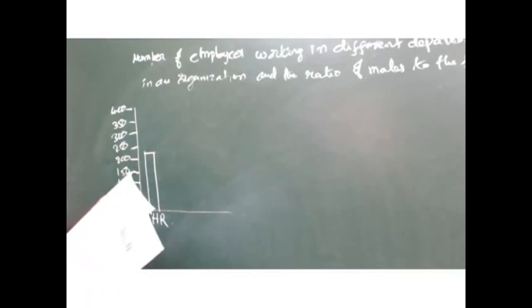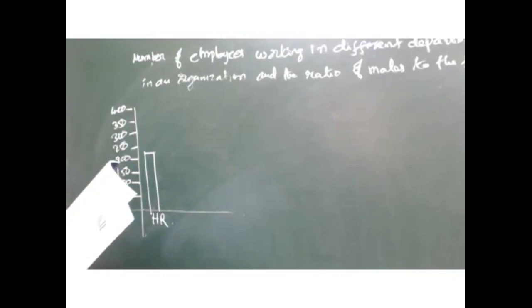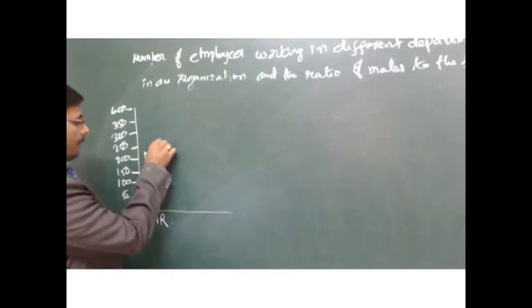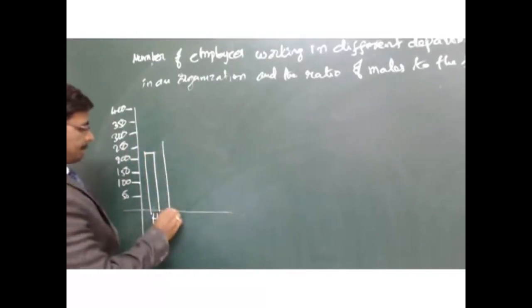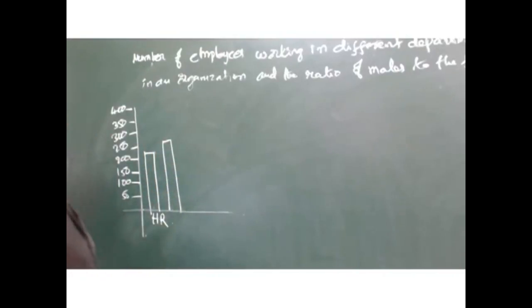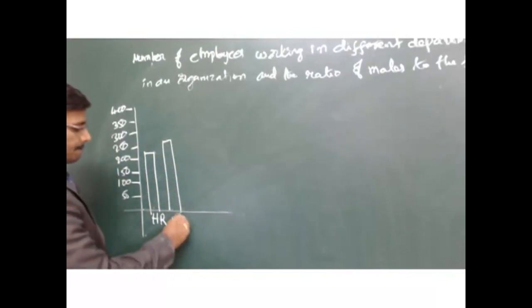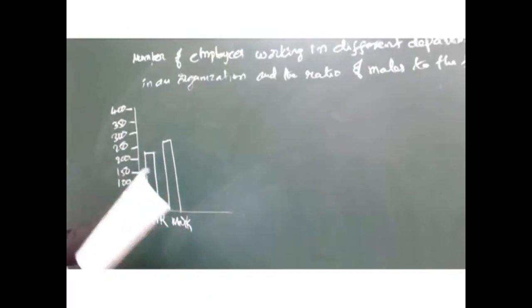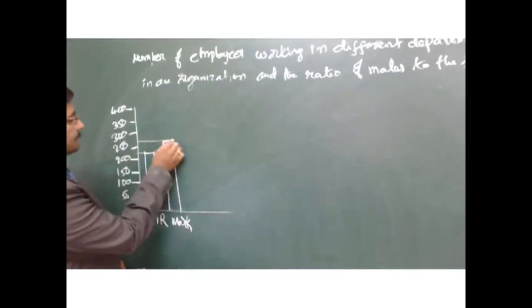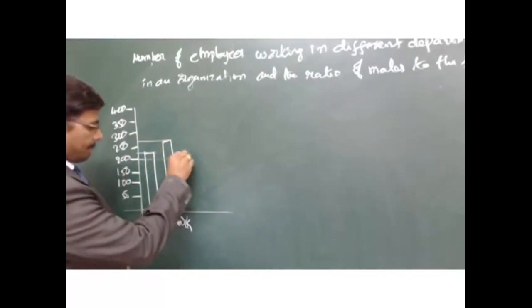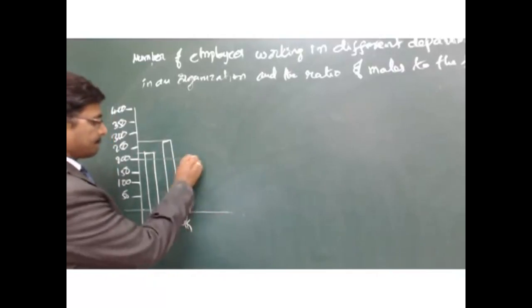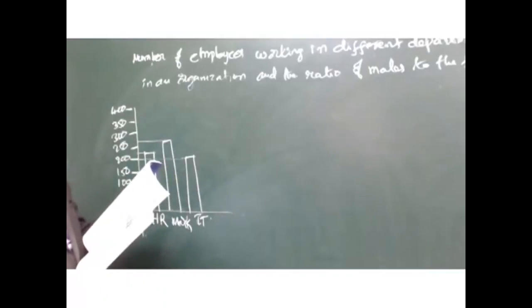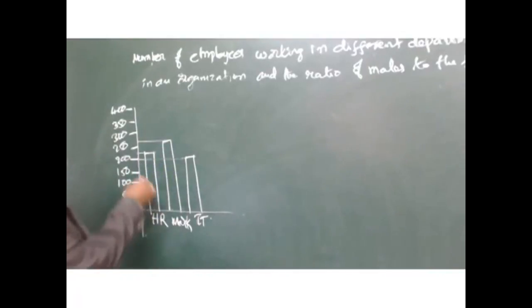Next, the marketing department has 275 members in the row. Marketing department next to IT department has 200 members in the row.